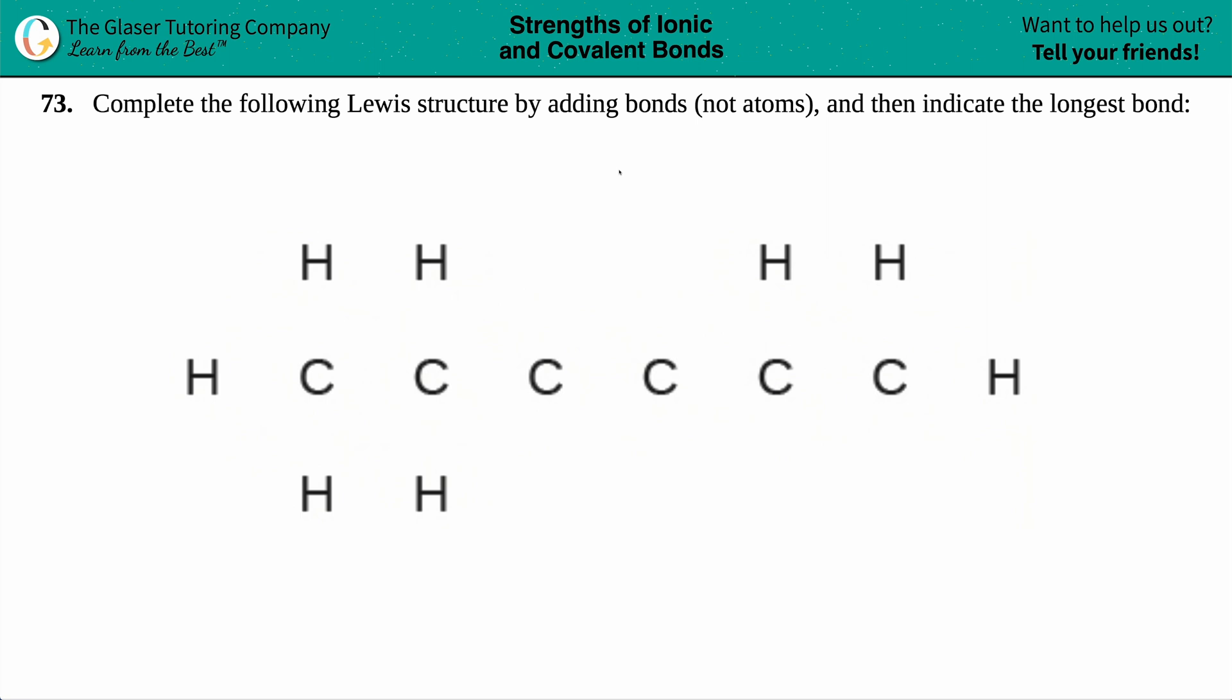Number 73: Complete the following Lewis structure by adding bonds, not atoms, and then indicate the longest bond. We have this big mess over here, so we have to fill in the bonds for this compound.